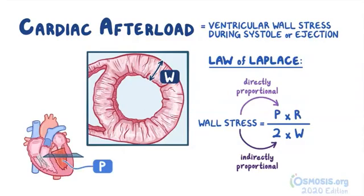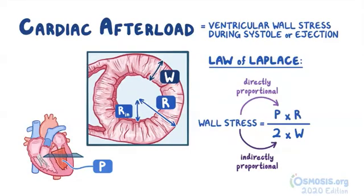Pressure, or p, refers to the pressure exerted by the ventricular wall on the ventricular cavity during systole. The radius is the distance from the center of the ventricle to the outer edge. It comprises an inner radius (rin), which is the radius of the ventricular cavity, and the full radius equals rin plus the ventricular wall thickness.